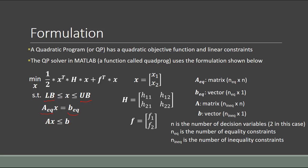Similarly, for inequality constraints: the A matrix has as many rows as we have inequality constraints and as many columns as we have decision variables. The B vector has as many rows as inequality constraints but is a single column vector. This sounds a little abstract right now, but it will make more sense once we define an actual problem.